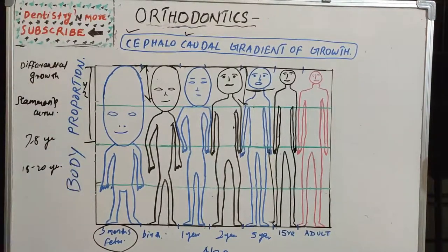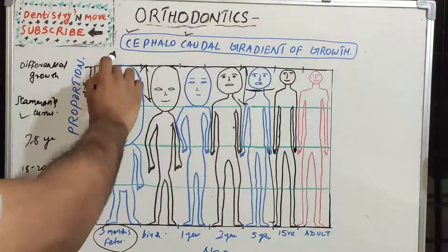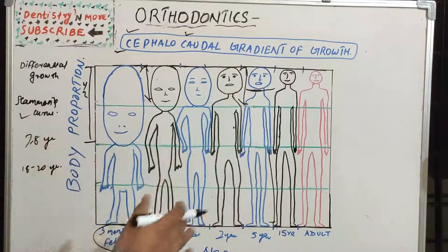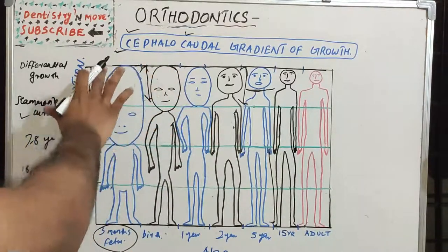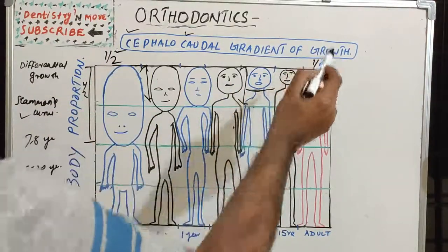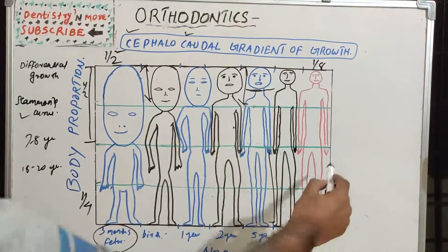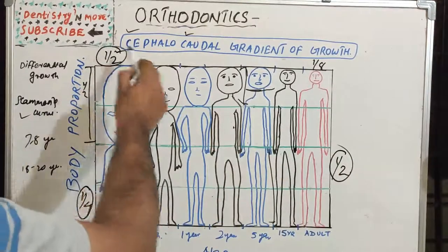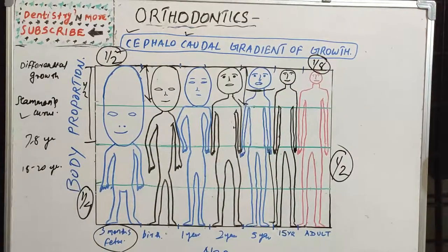That's all about the gradient of growth. Differential growth can be expressed in two ways: Scammon's curve and the cephalocaudal gradient of growth. When drawing this, you can represent how the head changes from one half to one eighth, and how the limbs become one half of total body length — highlight these two points and draw a neat picture. That's all about cephalocaudal gradient of growth. I'll come up with a new topic in orthodontics. Thank you.